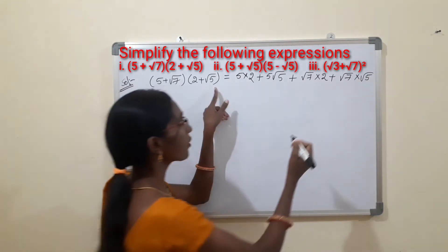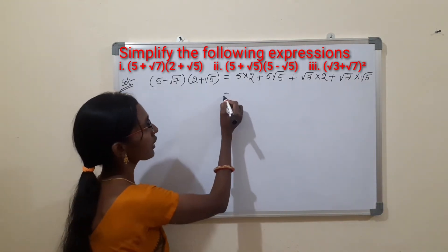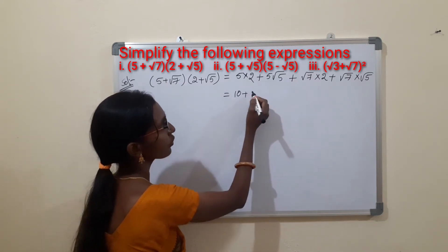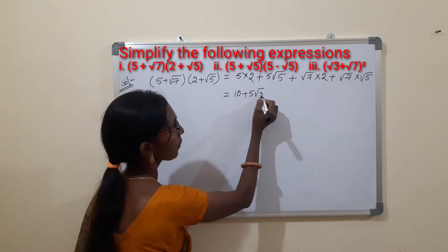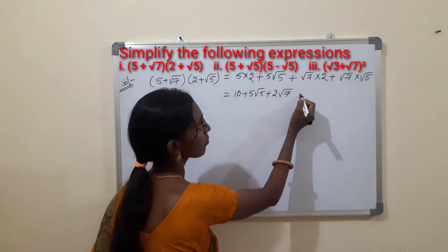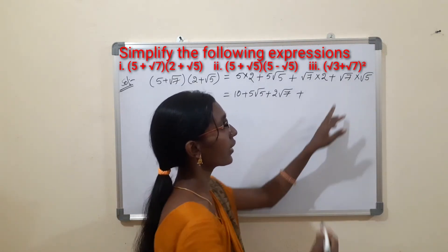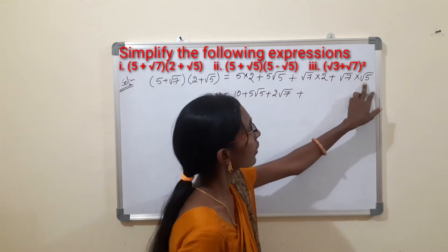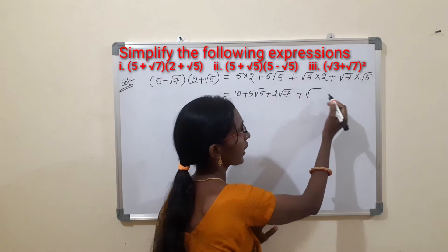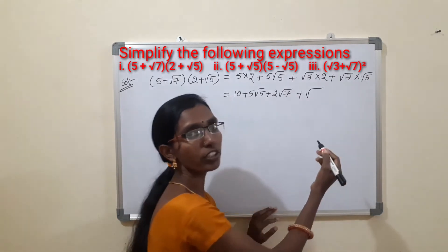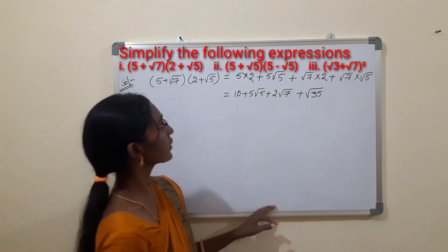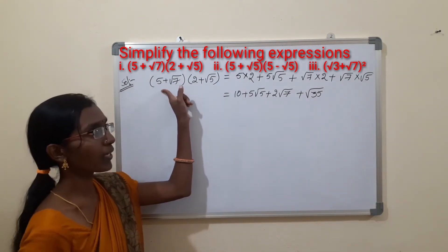Now we simplify each term: 5 into 2 is 10, plus 5 into √5 is 5√5, plus √7 into 2 is 2√7, plus √7 into √5. Since both are square roots we can multiply: √(7×5) = √35. So the answer is 10 + 5√5 + 2√7 + √35.